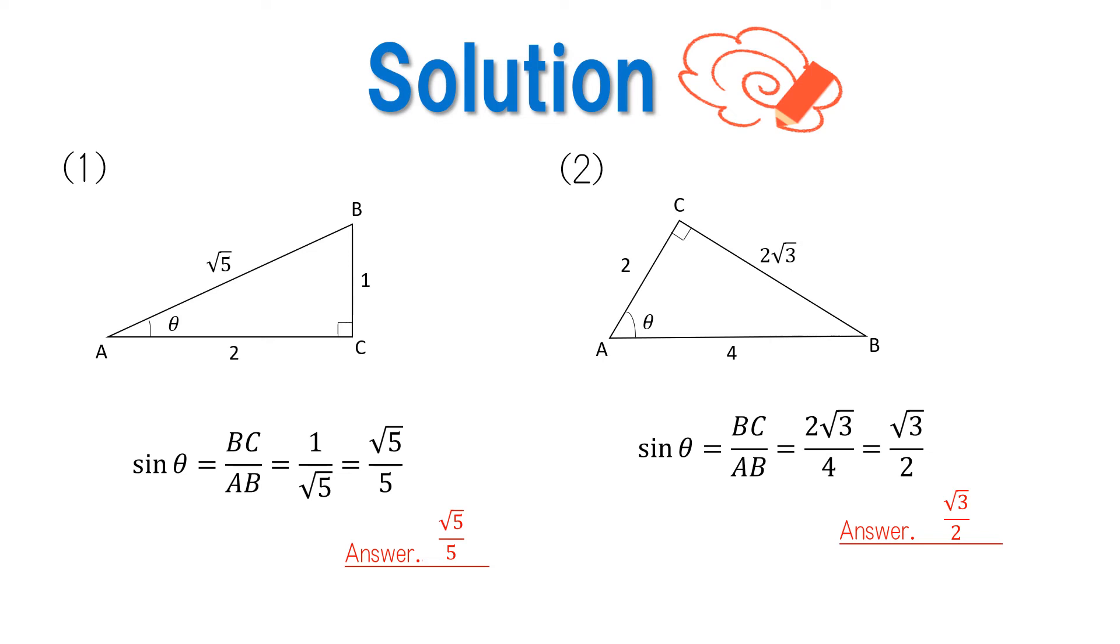For number two, in the right triangle in the figure, sine theta equals BC over AB, which equals 2 square root of 3 over 4, which equals square root of 3 over 2. The answer is square root of 3 over 2.